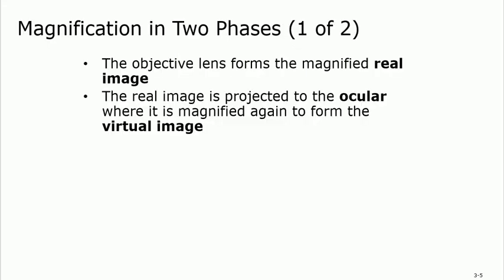We talked about two different types of lenses: the objective lens and the ocular lens. The ocular comes from 'oculus,' meaning the eye — it's the one on top that you put your eye on, and it gives you a virtual image, which is a really magnified image. The objective lens magnifies to some extent and gives you the real image. So: objective gives you the real image, and the ocular gives you the virtual image.